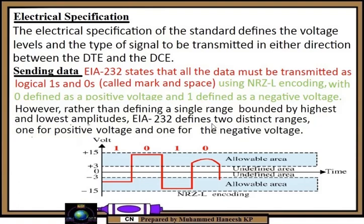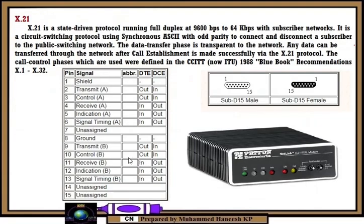NRZ stands for Non-Return to Zero. This is the electrical specification for voltage. NRZ is the encoding used, with an allowable area defined between minus three and plus three volts. In the next video we will cover the X.21 interface. Thank you.